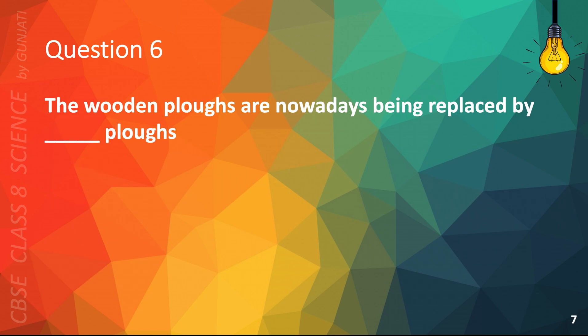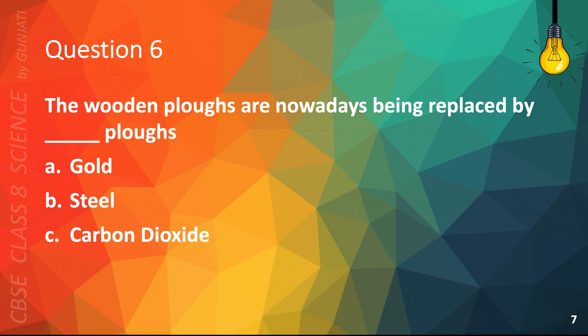Question 6. The wooden plows are nowadays being replaced by blank plows. A. Gold, B. Steel, C. Carbon Dioxide, or D. Iron. The correct answer is D. Iron.